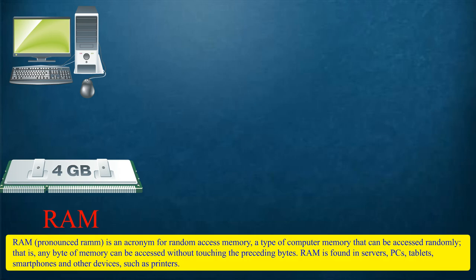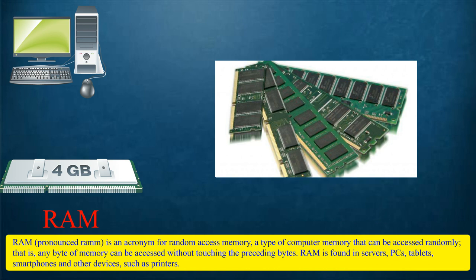RAM. RAM is an acronym for Random Access Memory, a type of computer memory that can be accessed randomly — that is, any byte of memory can be accessed without touching the preceding bytes. RAM is found in servers, PCs, tablets, smartphones, and other devices such as printers.